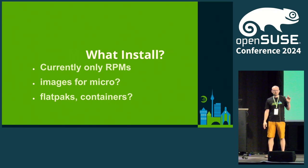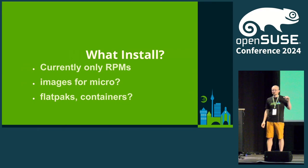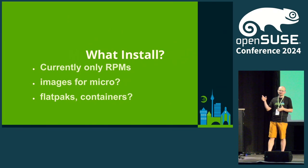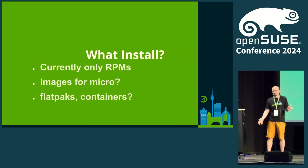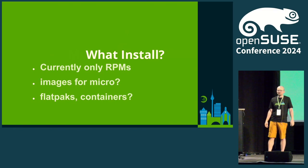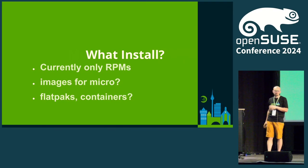Another issue with images is additional software. Depending on what you select in the installer, it can install some additional software — for example, if you select a separate XFS partition, the installer automatically installs all XFS utils. Same for TPM2 — it installs TPM2 software, but if you don't use it, the software isn't there. Basically the installer tries to create a minimal system that works for you and contains everything useful. That optimization doesn't exist with images.